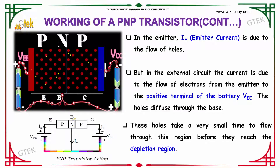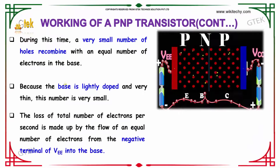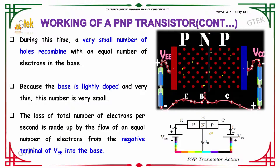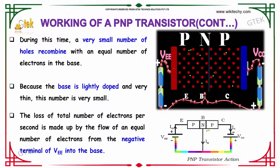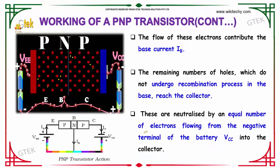The holes diffuse through the base, taking a very small time to flow through this region before reaching the depletion region. During this time, a very small number of holes recombine with an equal number of electrons in the base. Because the base is very lightly doped and very thin, this number is really small. The loss of electrons is made up by the flow of an equal number of electrons from the negative terminal of VEE into the base, and this contributes to the base current IB.